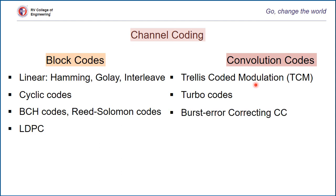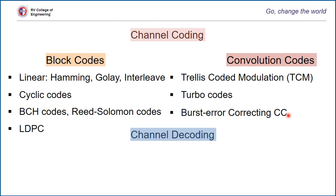There are other types of convolution codes as well. One of them is known as burst error-correcting convolution codes, which are also used in the current world.